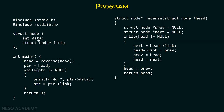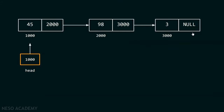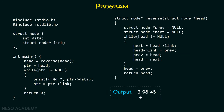Here is the final program. We have a reverse function with a previous pointer and a next pointer that reverses the whole single linked list. For a given linked list, the output of this program is 3 9 8 4 5. Finally, we return head back to the main function, which uses this to print all values of the reversed linked list.